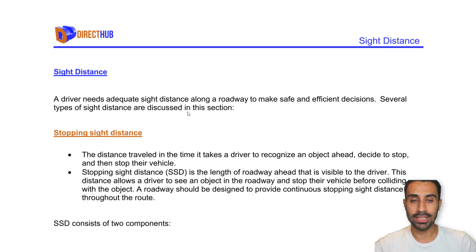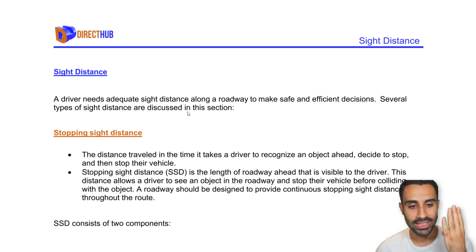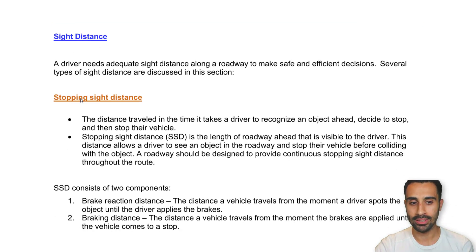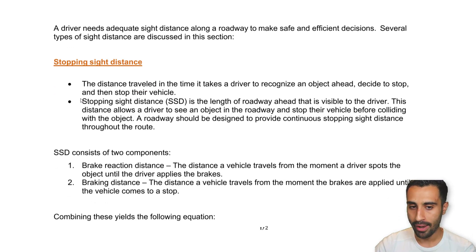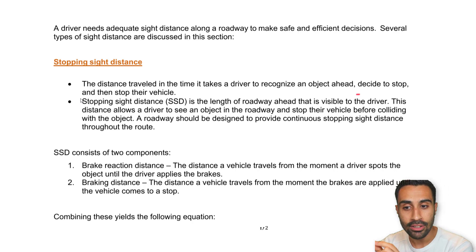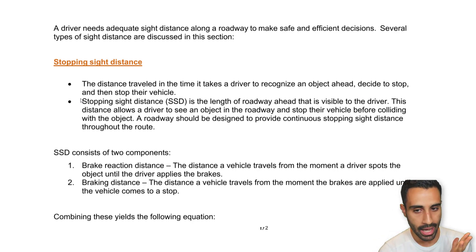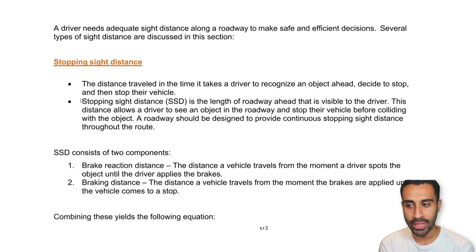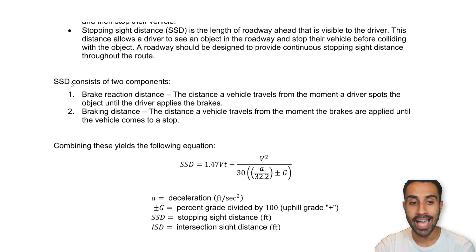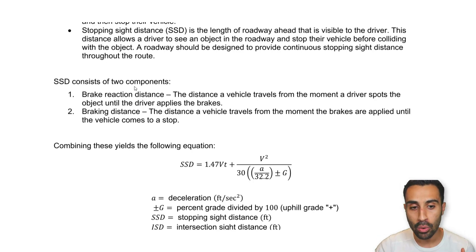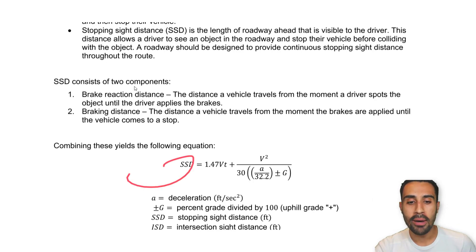We're looking at sight distance broken down into four major types. The first is the stopping sight distance. This is simply the distance traveled in the time it takes for a driver to recognize an object ahead, decide to stop, then stop their vehicle. Notice there's a recognition part — perception reaction time — then we decide to stop. The stopping sight distance consists of two components: the brake reaction distance and the braking distance.